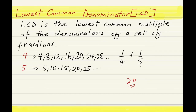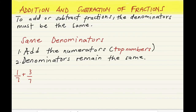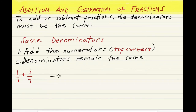Let's use this to solve the questions that follow. Addition and subtraction of fractions is very similar — the denominators or the bottom numbers must be the same. If the denominators are the same, all you have to do is add the numerators, which I'll refer to as the top numbers. For example, 1 over 7 plus 3 over 7 is simply 1 plus 3 over 7, giving an answer of 4 over 7.